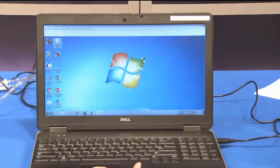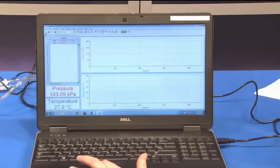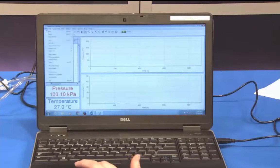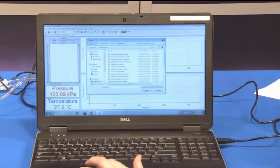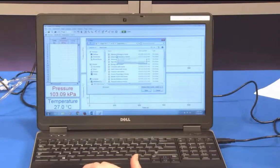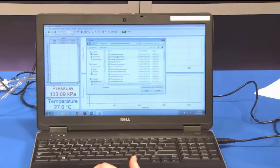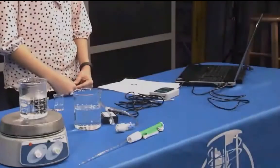Next, open the Logger Pro software on your computer. Finally, go to File, Open to open the Advanced Chemistry with Vernier folder. Open the file 34 Vapor. You should see a graph and a temperature and pressure box with the current temperature and pressure displayed.